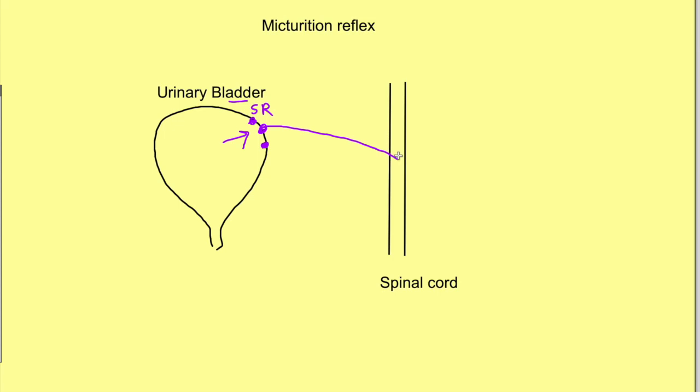The afferent from these stretch receptors reach to the sacral cord at the level of S2, S3, S4, from where the efferents arise and supply the smooth muscle of the urinary bladder, which we call the detrusor muscle. So this is the basic micturition reflex. There is a receptor, there are afferents, there is a center at the level of the spinal cord, and there are efferents supplying the detrusor muscle.